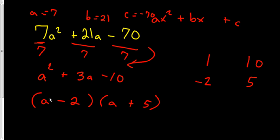Let's check that out. A times A is A squared. A times 5 is 5A. Negative 2 times A is negative 2A. And negative 2 times 5 is negative 10. Here we go, it worked out. 5A minus 2A is 3A.